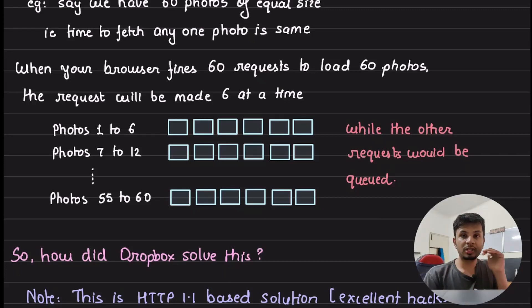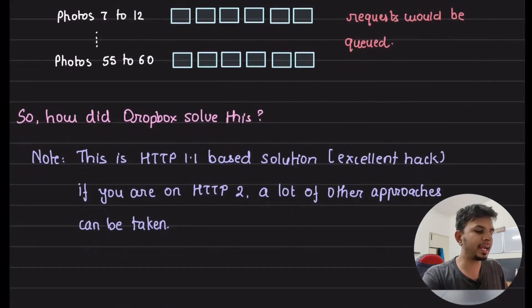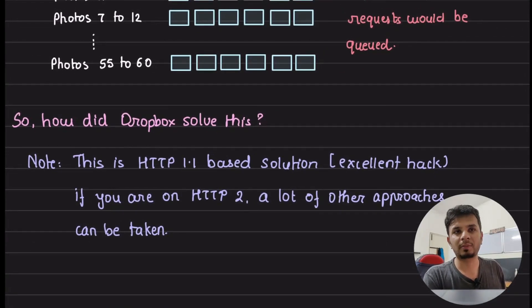Here you see a lot of requests just being waiting to be executed. That is where the problem is. So, can we solve this problem? Can we somehow find a way to solve this particular problem? Again, just iterating it back, this is an HTTP 1.1 based solution. In HTTP 2, a lot of things have changed and a lot of other approaches can be used to solve this exact same problem.